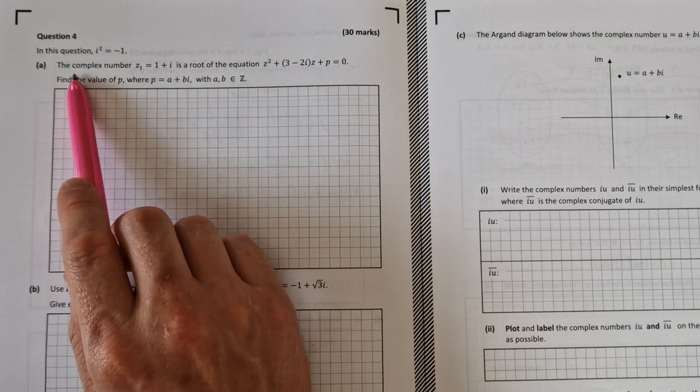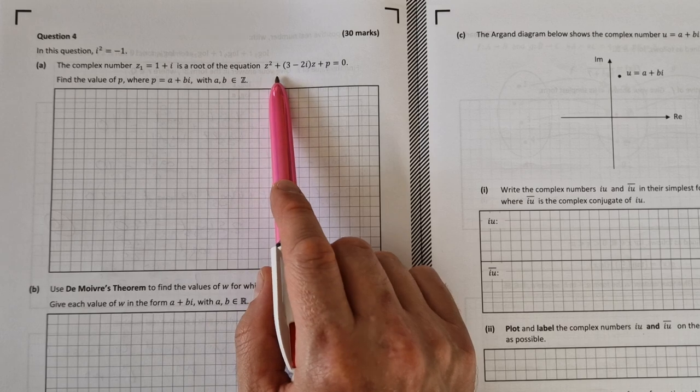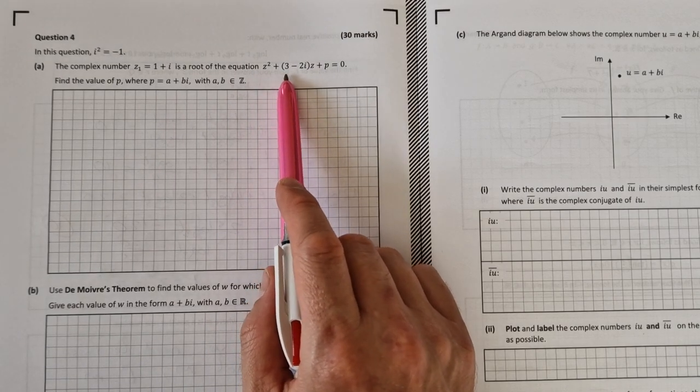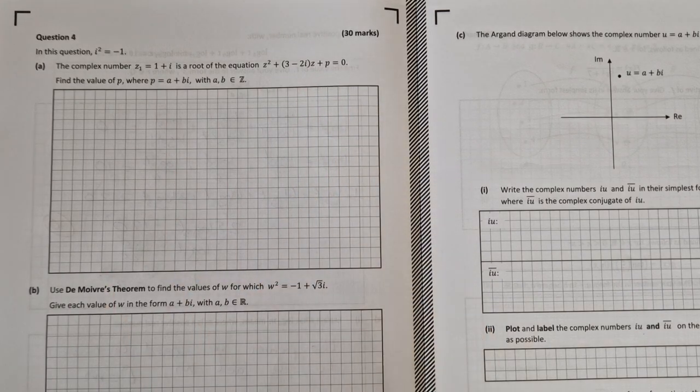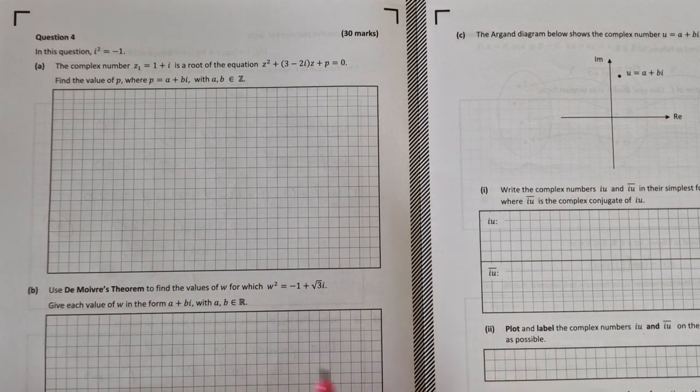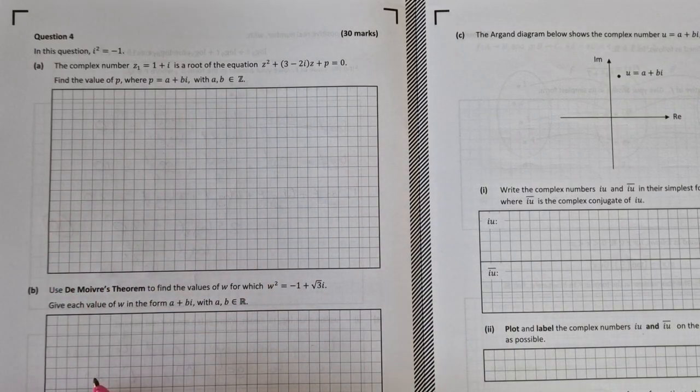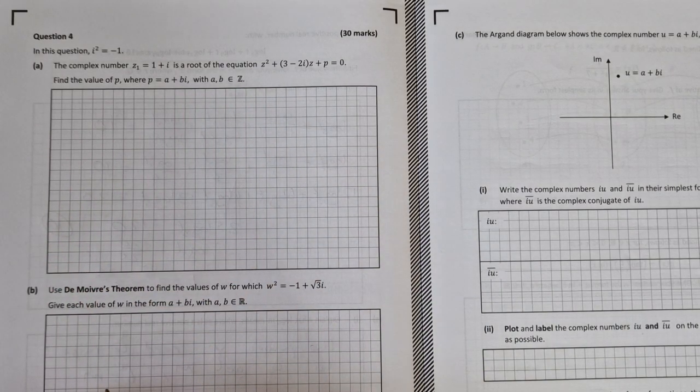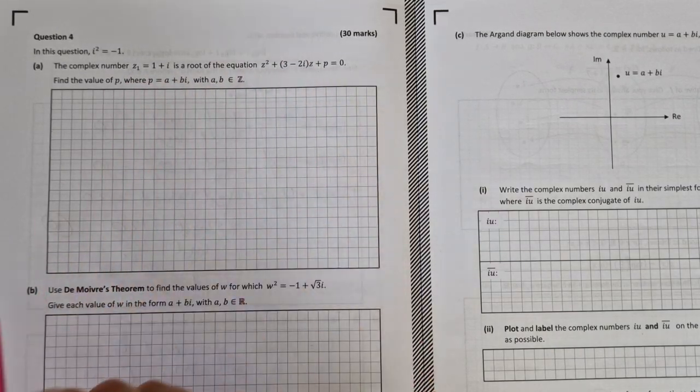In this we're told the complex number z1 equal to 1 plus i is a root of the complex equation z squared plus (3 minus 2i) times z plus p equals 0. Find the value of p where p is a complex number a plus bi with a and b elements of Z. The easiest way and the quickest way is to substitute 1 plus i in for z here.